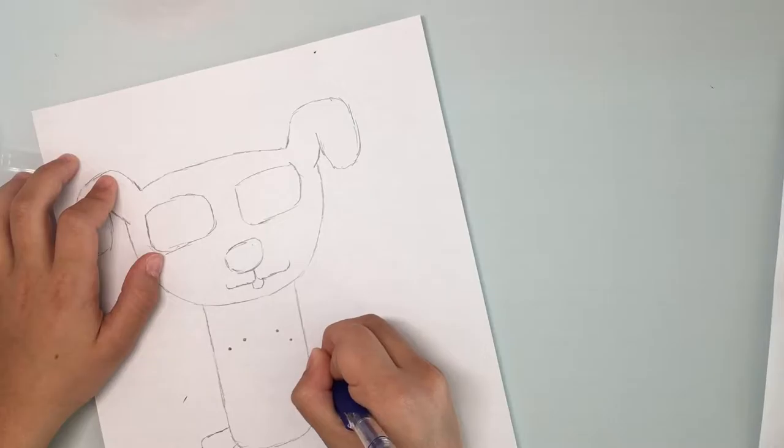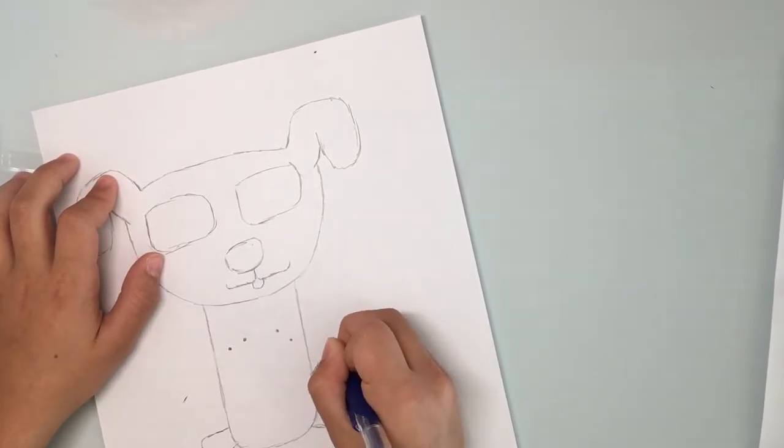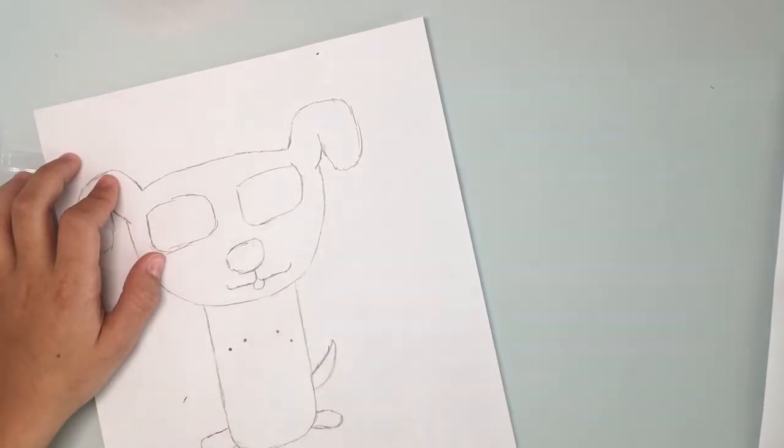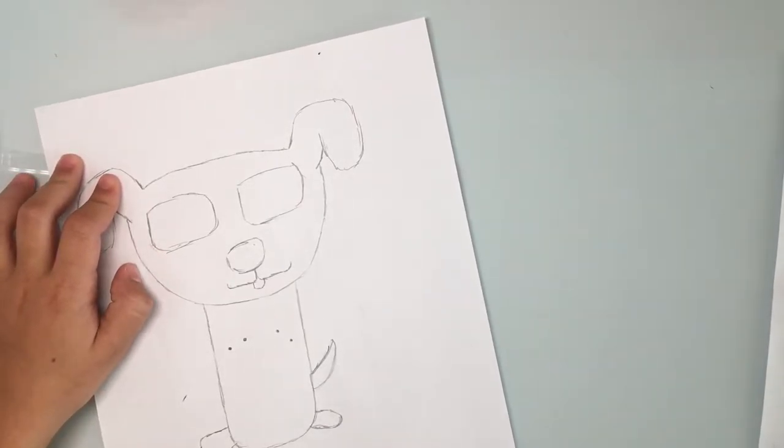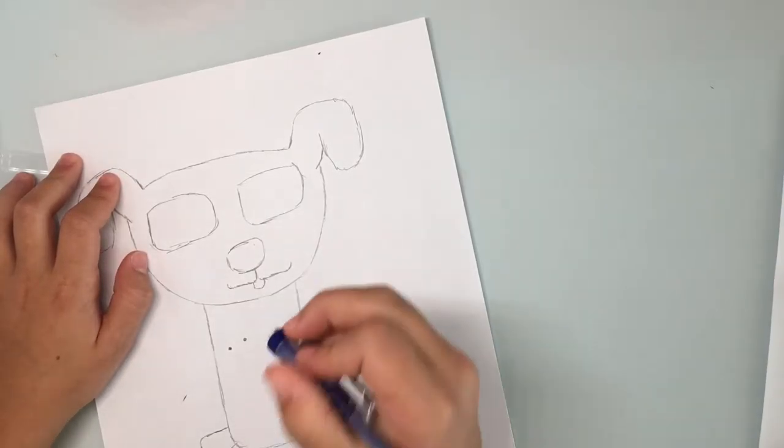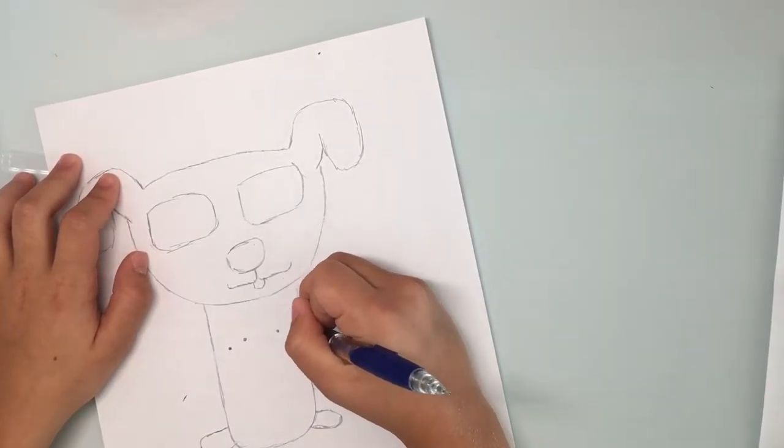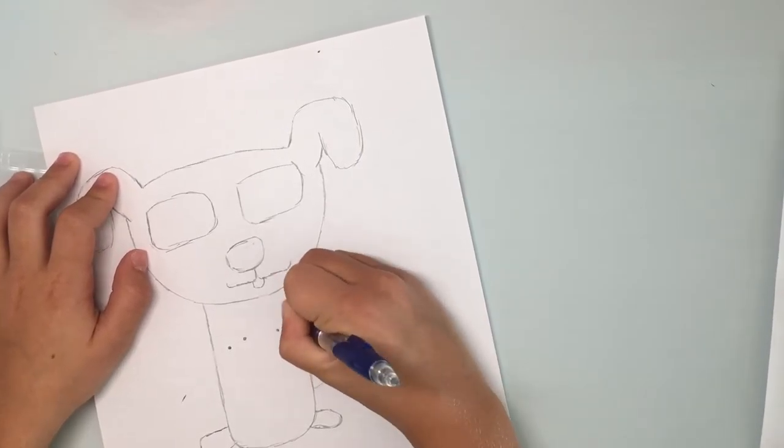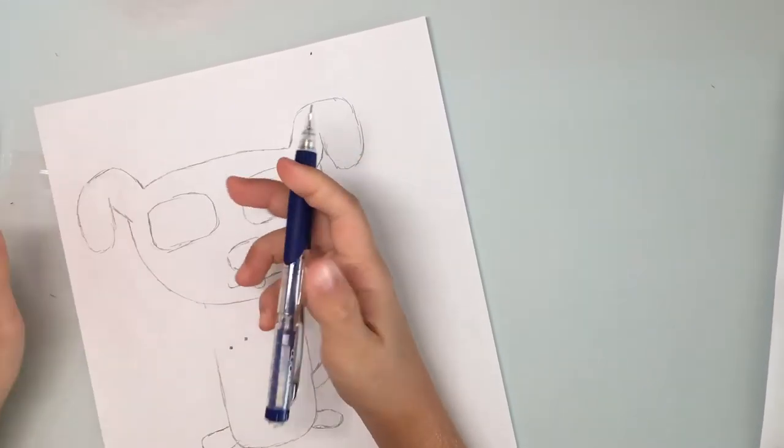And now draw the back legs and the tail. Later, I'll show you how to make the back to where it looks like it's moving around like I did in the picture there.